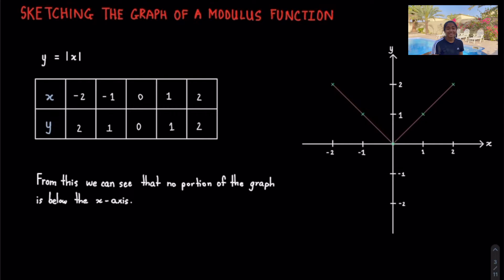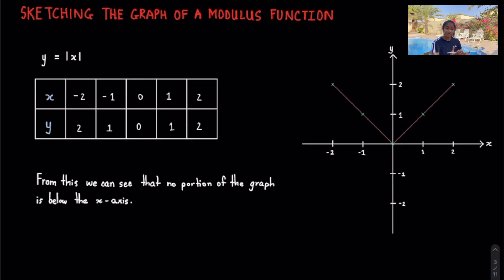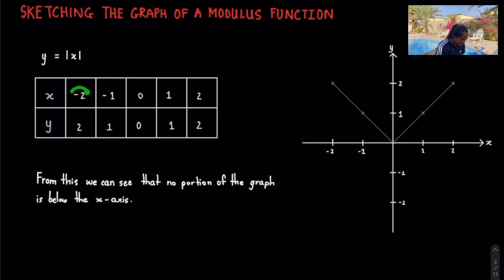Sketching the graph of a modulus function is very similar to how you would do it for a normal linear or quadratic. You need to find values for x and y and then plot them. Let's look at y equals the modulus of x. Get a range of values, typically from minus 2 to 2, including some negative, some positive, and the origin. Plug in all x values to get y values — the modulus of minus 2 is 2, minus 1 is 1, and so on. Now plot those ordered pairs.